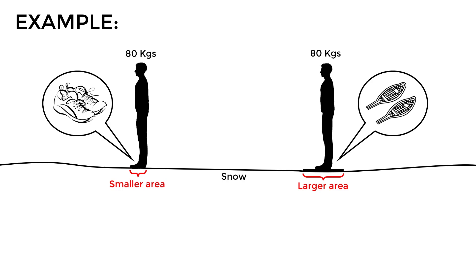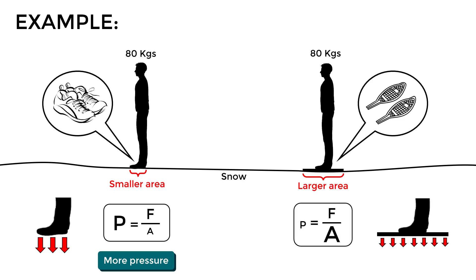With this, it is evident that the person on the left is distributing those 80 kilograms over a smaller area than the person on the right, who is standing over a larger area. So, if we apply the pressure formula we have just seen, in the case of the person on the left, having a small surface, the pressure exerted on the snow will be higher. While on the other hand, the person on the right, standing over a larger surface, will exert less pressure on the snow. For this reason, the person on the left will tend to sink into the snow, while the person on the right will be able to walk more easily.